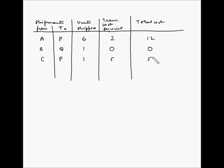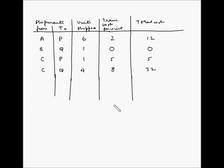The next allocation is C to P for 1 unit with a cost of 5, so the total is 5. The next is C to Q for 4 units with a cost of 8, so 8 × 4 = 32. The next allocation is C to S for 2 units with a cost of 9, so 9 × 2 = 18.